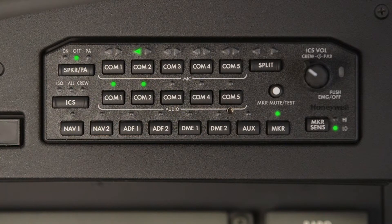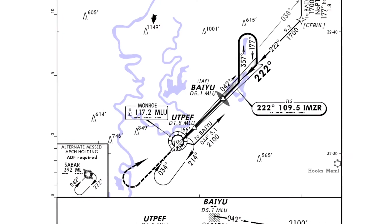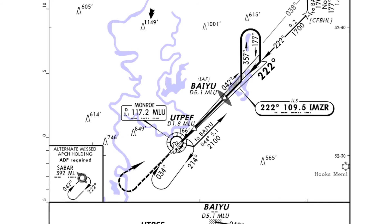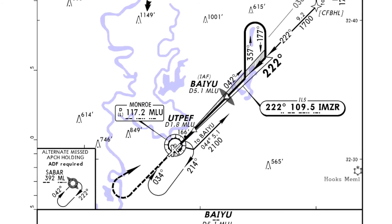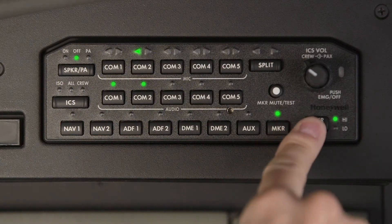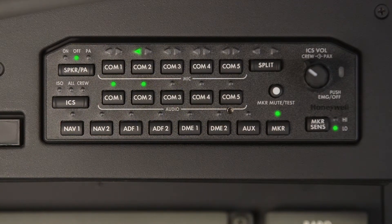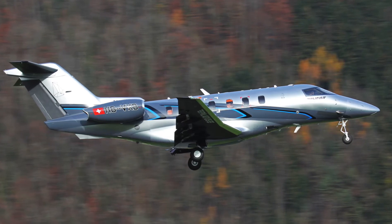Pushing the marker sensitivity button toggles the marker beacon receiver sensitivity between High and Low. High allows the pilot to hear the outer marker approximately one mile from the beacon, and Low provides a more accurate location of the marker. Many pilots choose to leave the switch in the low sensitivity position when it is to be used only for approach markers.